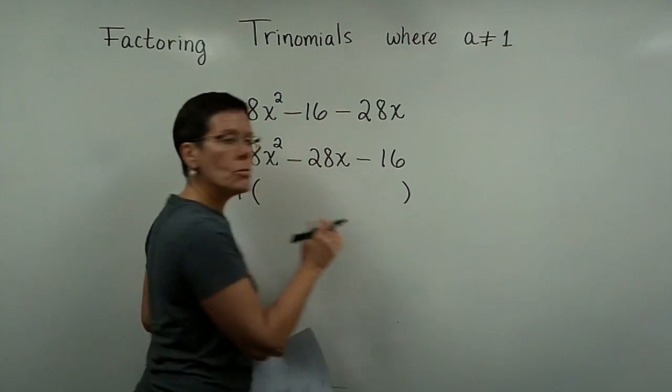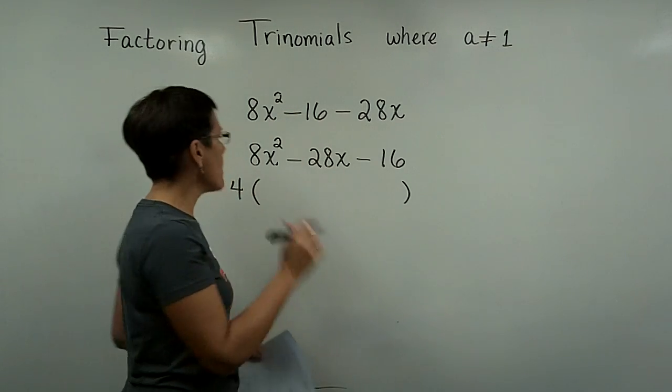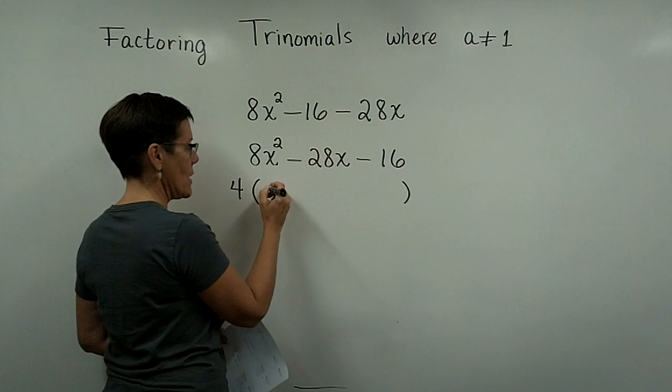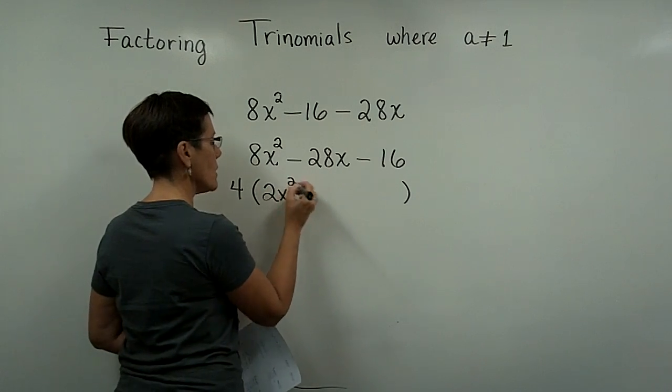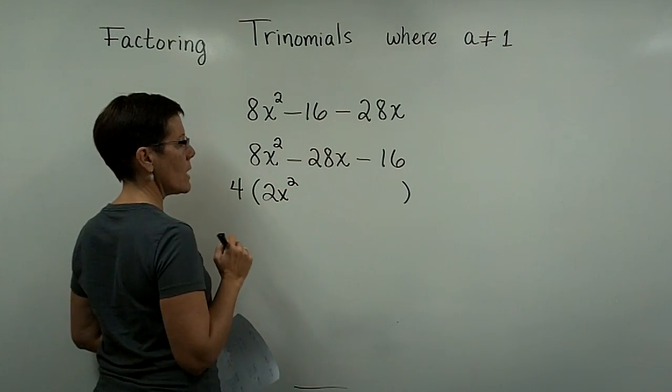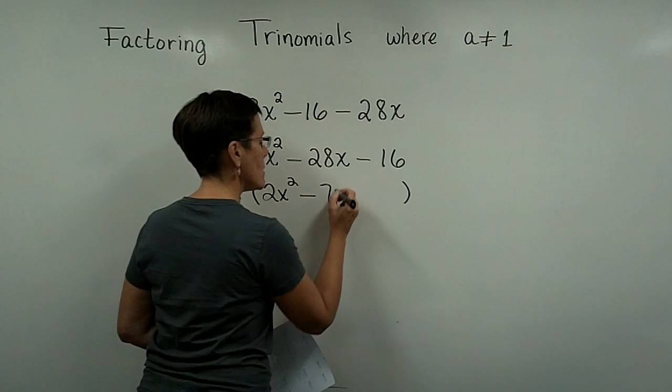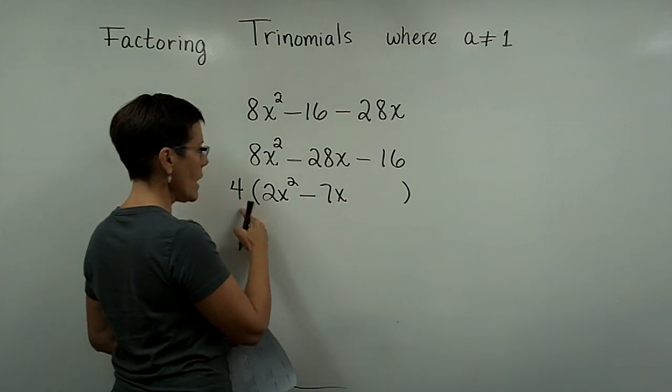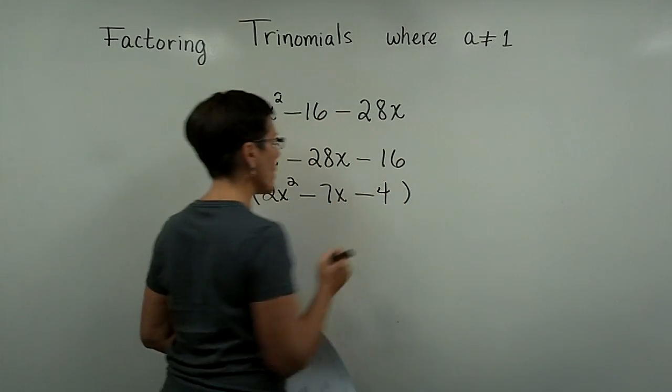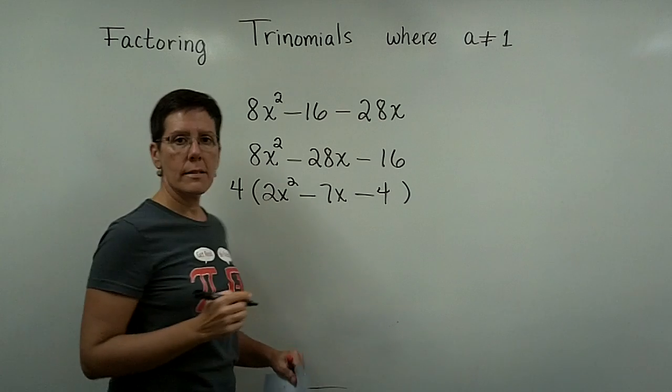Whatever you do, don't try to do more than one thing at a time. Just get the 4 out. So I need a 2x squared here because 4 times 2x squared is the 8x squared. I need a minus 7x here, and then 4 times a minus 4 is that minus 16.